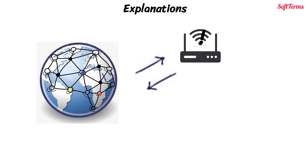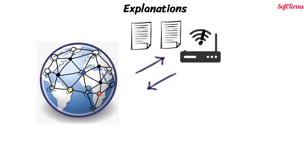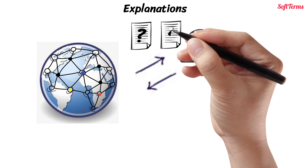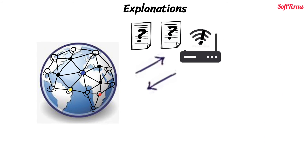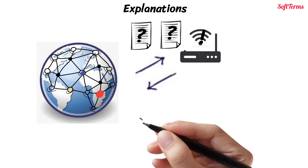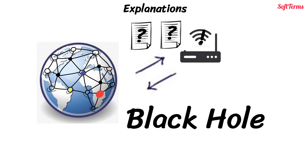a condition is created in which all the packets directed toward that router or the connecting network are lost as soon as they reach the point in the network where that router is installed. This is known as a black hole in the computer network.